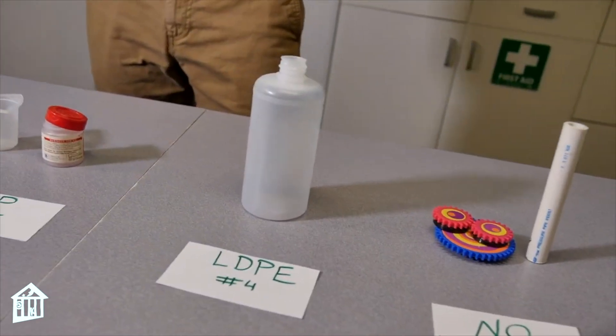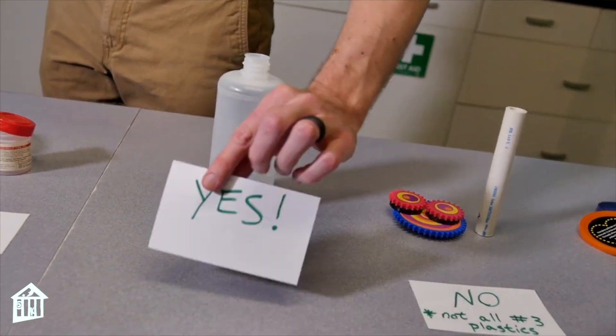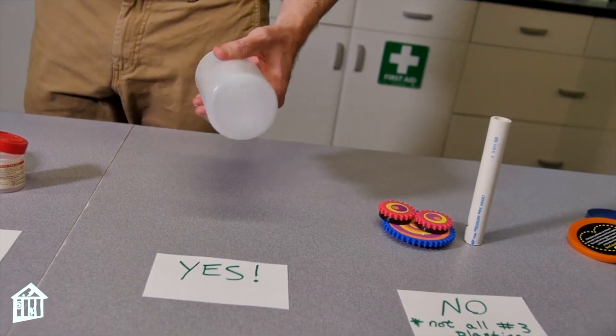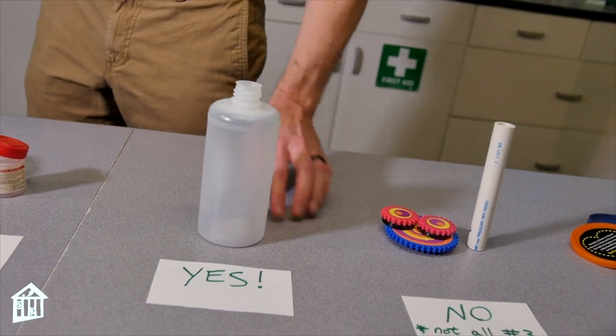For our fourth plastic, low density polyethylene. It is recyclable. So this is your bread bags. And also there are some more rigid bottles that are made out of low density polyethylene.